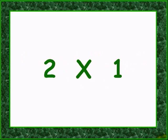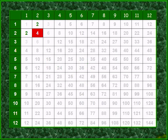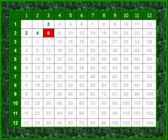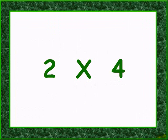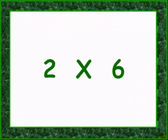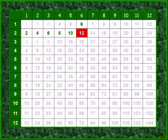Two times one is two. Two times two is four. Two times three is six. Two times four is eight. Two times five is ten. Two times six is twelve.